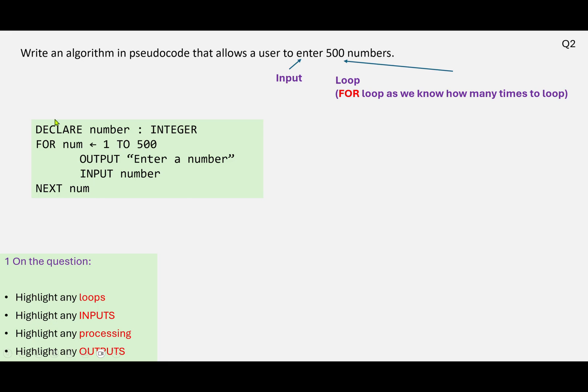And then also we're going to declare the variable here. So every time we introduce a new variable, we're going to declare that at the top. So DECLARE number is the identifier or the name of the variable number. And the data type is going to be INTEGER. Okay, so thank you very much. I'll stop this one and have a look at the next one.